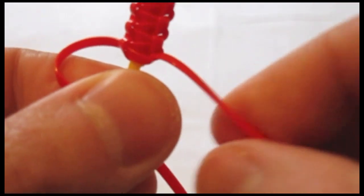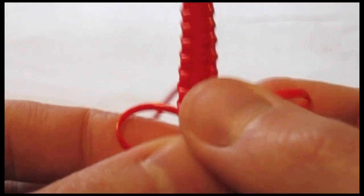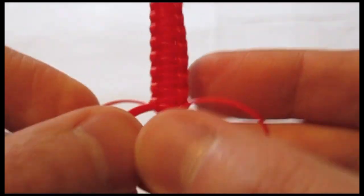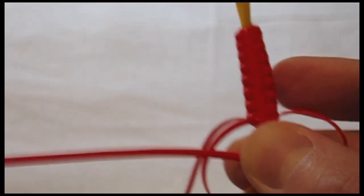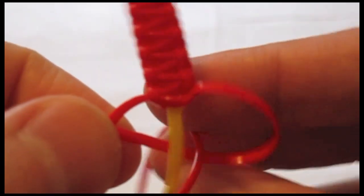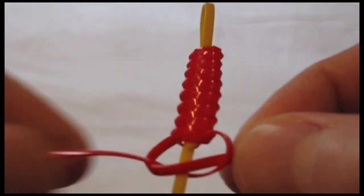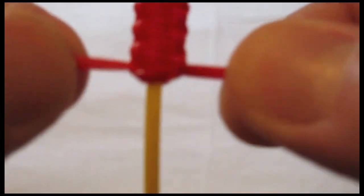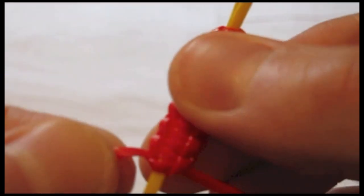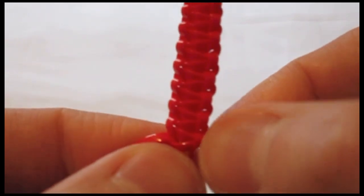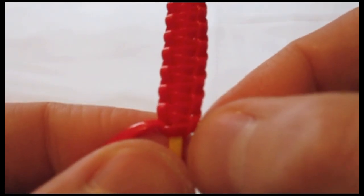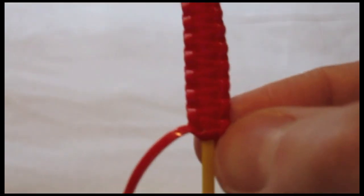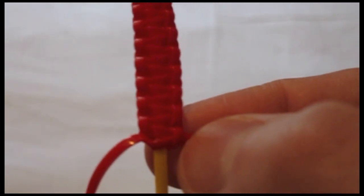So I'm going to start my next stitch on the left. You can see now my lowest loop is now on the right. That is from the stitch I just made starting on the left.